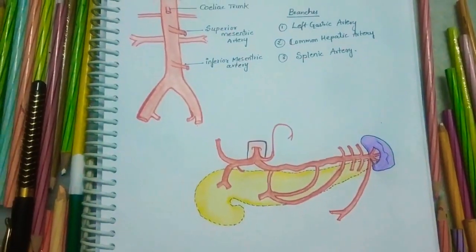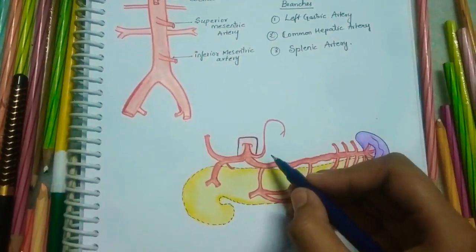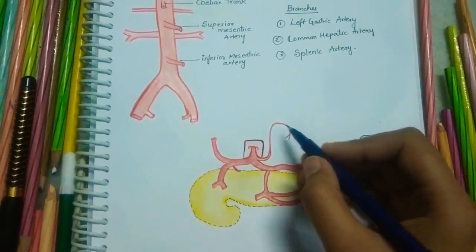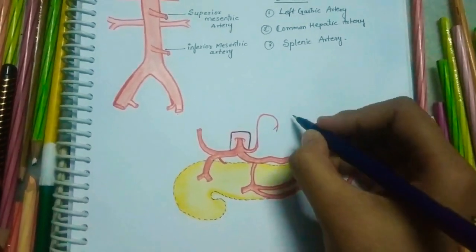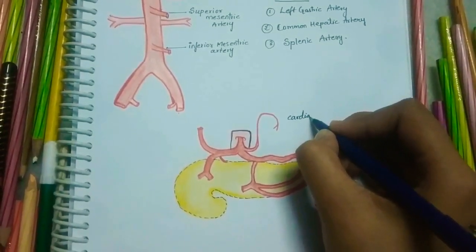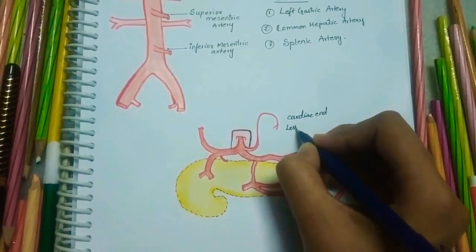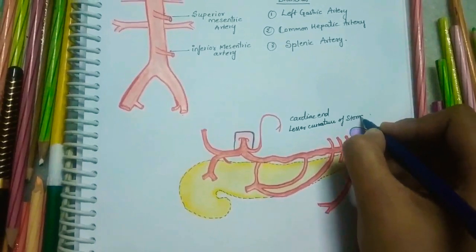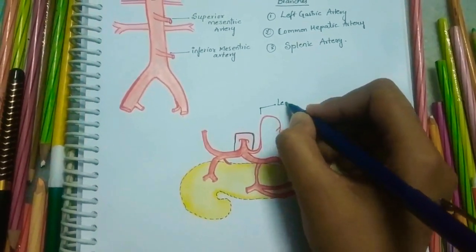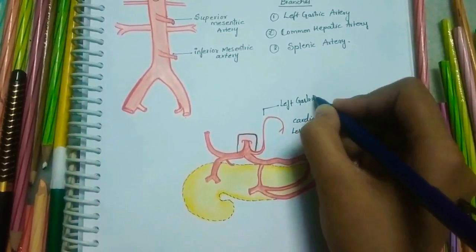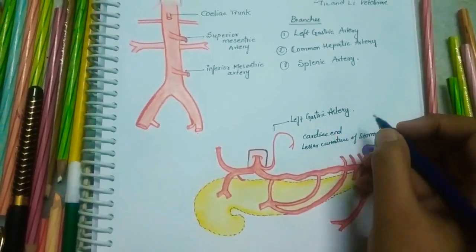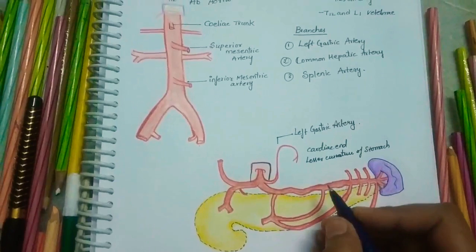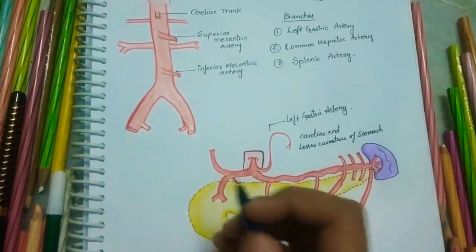The left gastric artery passes upwards and to the left, reaches the cardiac end of the stomach, and then runs downwards towards the lesser curvature of the stomach. It gives esophageal branches and small gastric branches along the stomach.